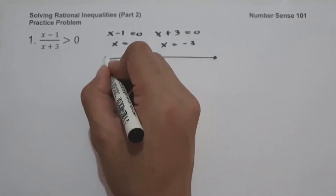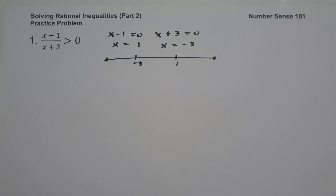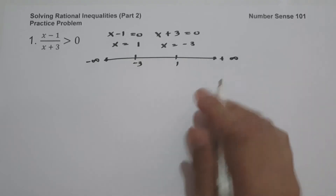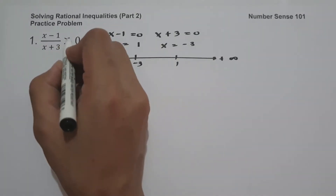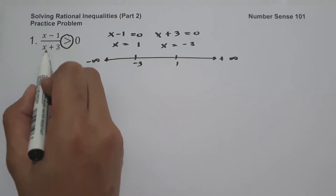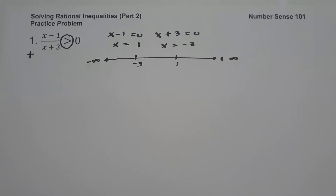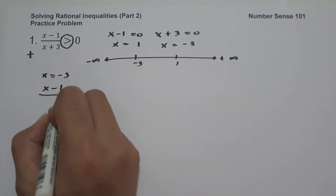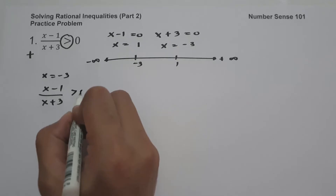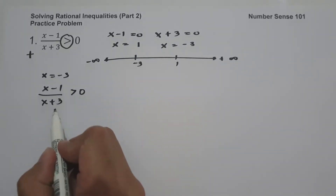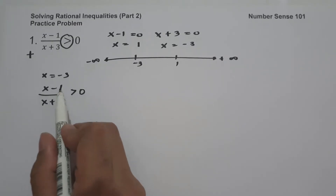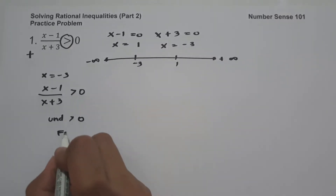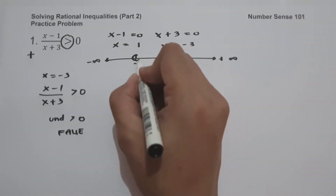Let us have a number line to check whether negative 3 and positive 1 are included in our solution. On the left we have negative infinity, on the right is positive infinity. Since our inequality symbol is greater than, the value of this expression must be positive because all positive numbers are greater than 0. If x equals negative 3, substituting on the denominator gives undefined, so undefined greater than 0 is false. I'm going to use an open circle for negative 3.